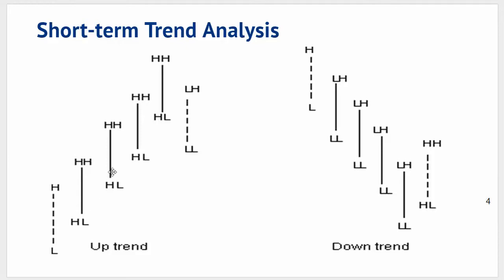We then move on to the next bar and compare it to the immediate previous bar — that's all we do, it's very simple. We have a higher high compared to the previous and a higher low compared to the previous. Therefore by definition we have an uptrend in place.